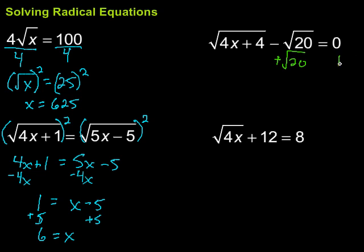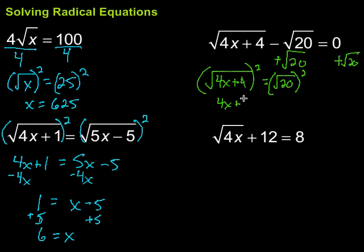So I'm going to go plus the square root of 20, plus the square root of 20. Then, on the left here, I'm going to have square root of 4x plus 4 is equal to the square root of 20. Now it looks awfully similar to that one. I've got a square root on each side. I've got to do that inverse operation to get rid of it. So I'm going to square both sides. Then, what's left here? It's going to be 4x plus 4 equals square root of 20 squared is 20.